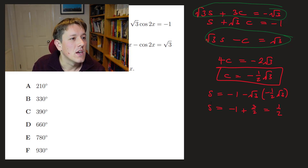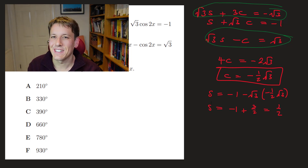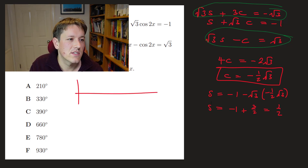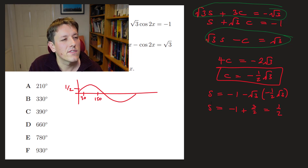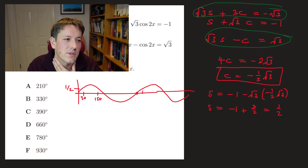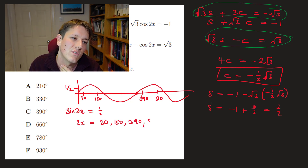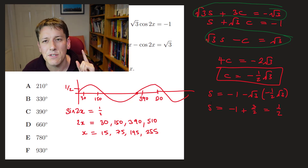For sine: from the first equation, s = −1 − √3·c = −1 + 3/2 = 1/2. So sin 2x = 1/2, which gives 30° as a basic solution. For x between 0° and 360°, 2x ranges from 0° to 720°, so 2x = 30°, 150°, 390°, or 510°, giving x = 15°, 75°, 195°, or 255°.